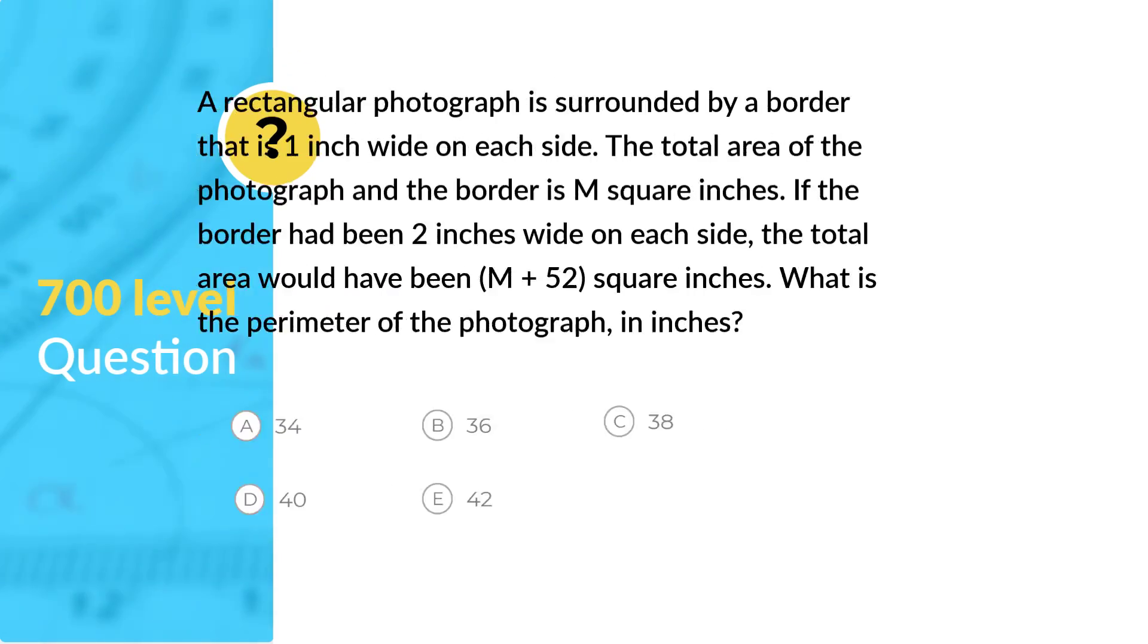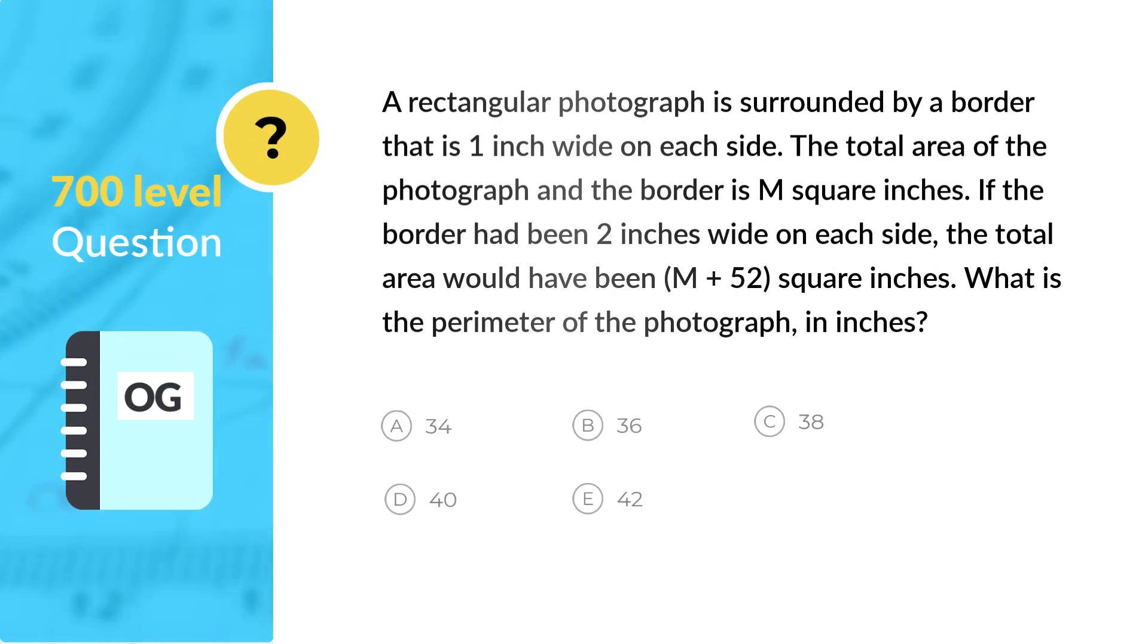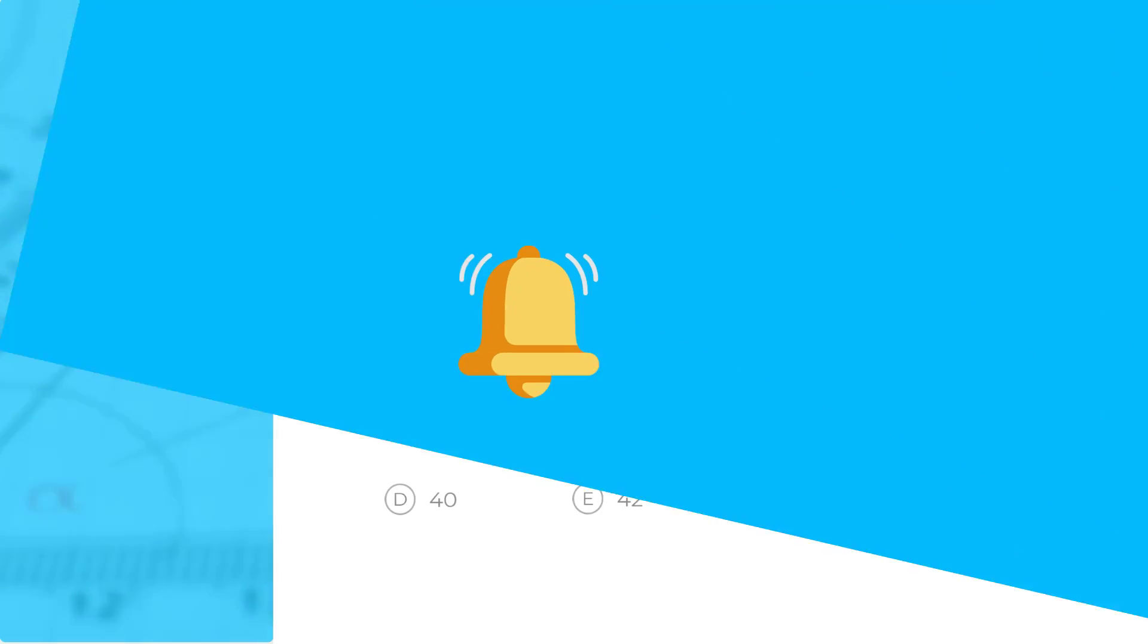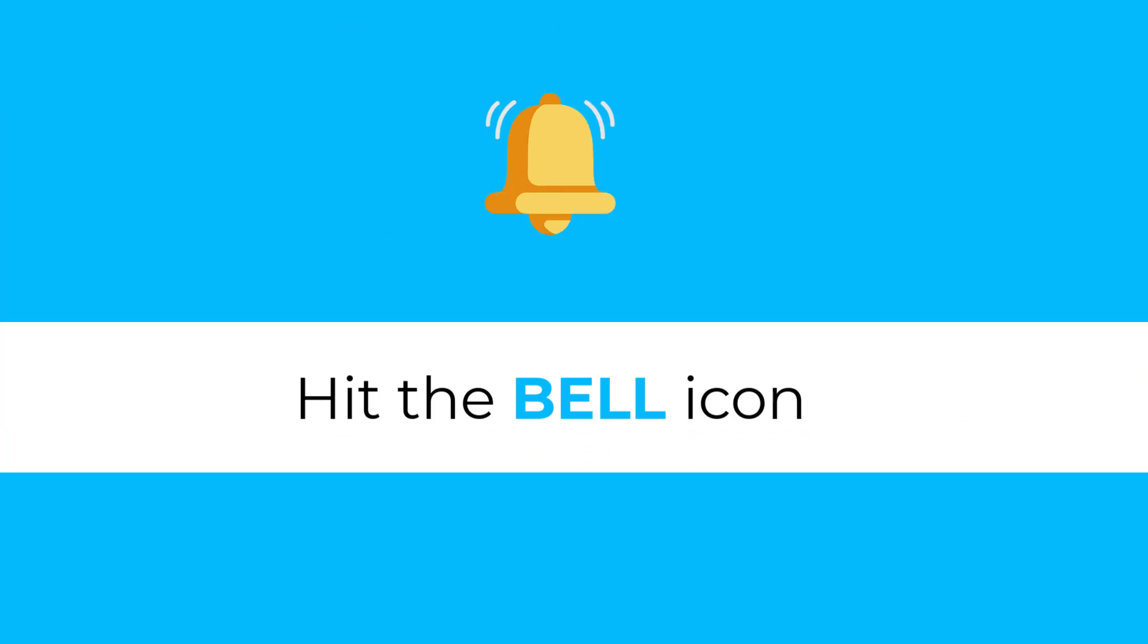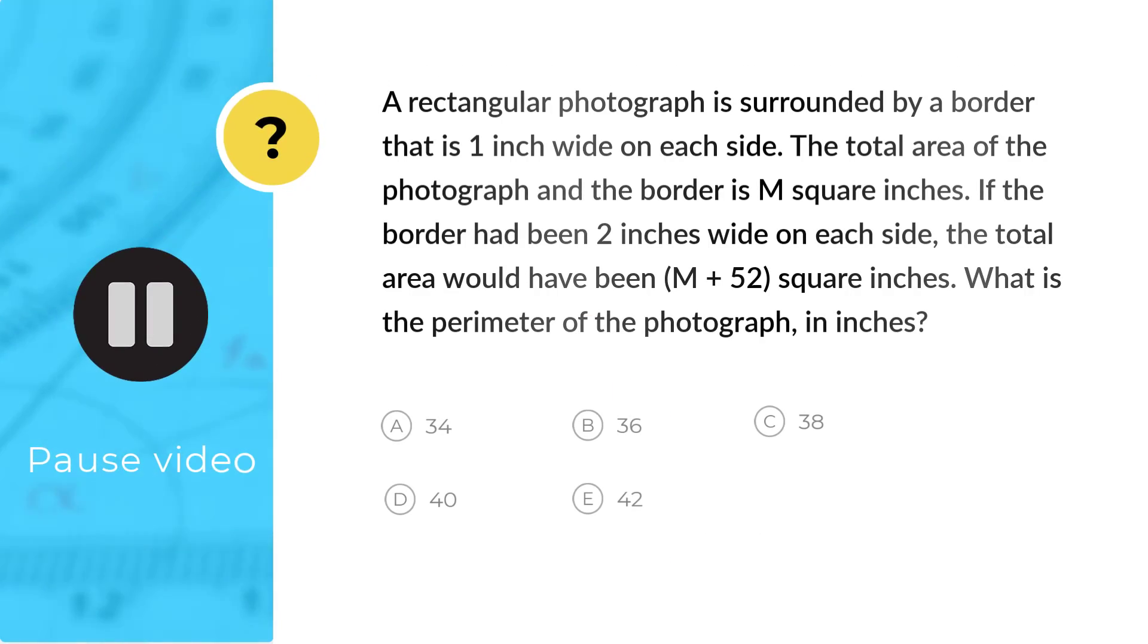Let's apply the Visualize Process skill on this 700 level geometry question from the official practice test. If you want to get notified as soon as we post questions and solutions, hit that subscribe button and the bell icon. Now pause the video to solve the question. Resume when you're done.